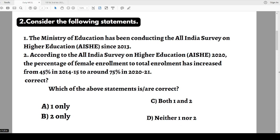Question number two: Consider the following statements regarding the recent report. Statement one: The Ministry of Education has been conducting the All India Survey on Higher Education since 2013. Statement two: According to the survey 2020, the percentage of female enrollment increased from 45% in 2014-15 to around 75% in 2020-21. Which statements are correct? Options: 1 only, 2 only, both, or neither.